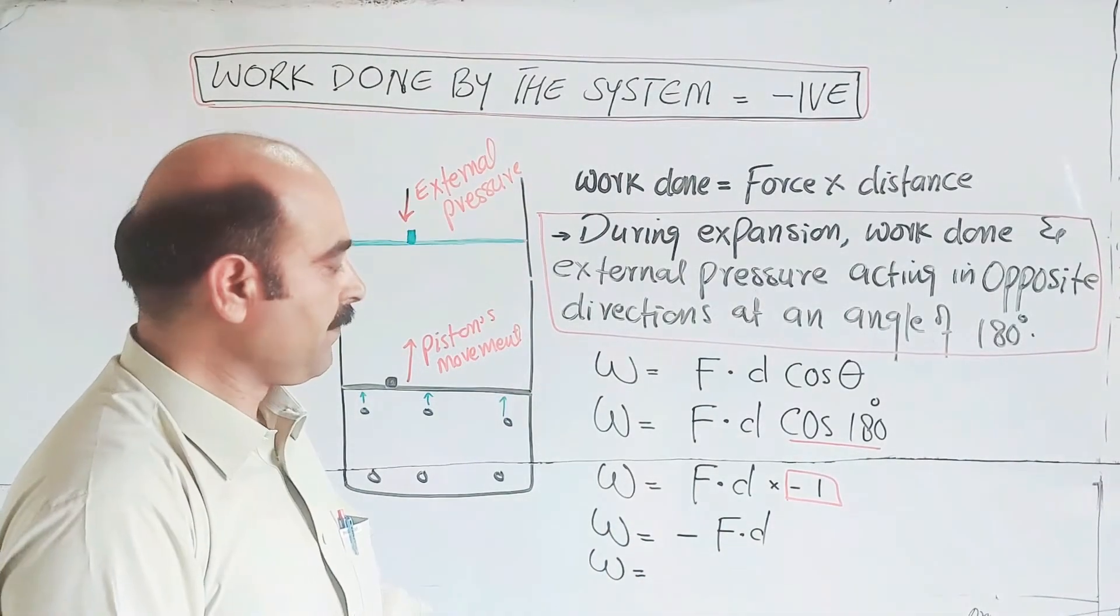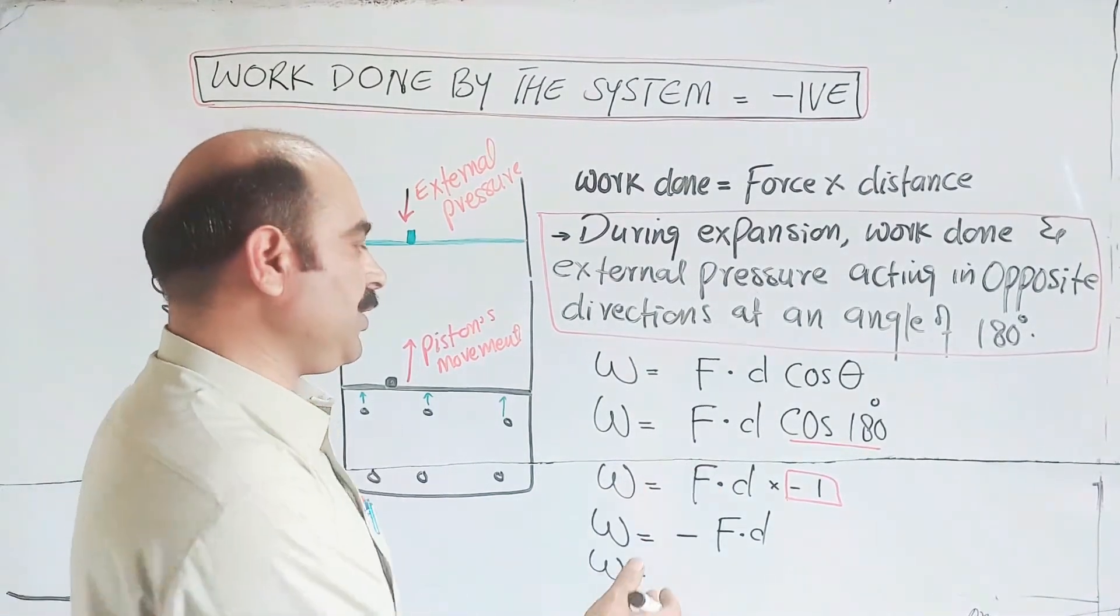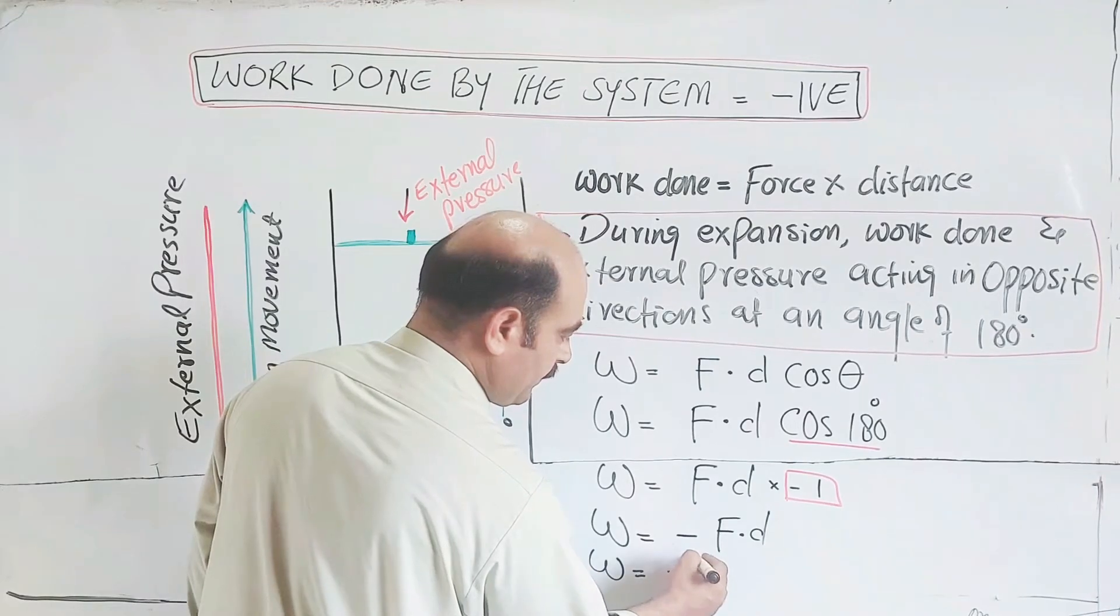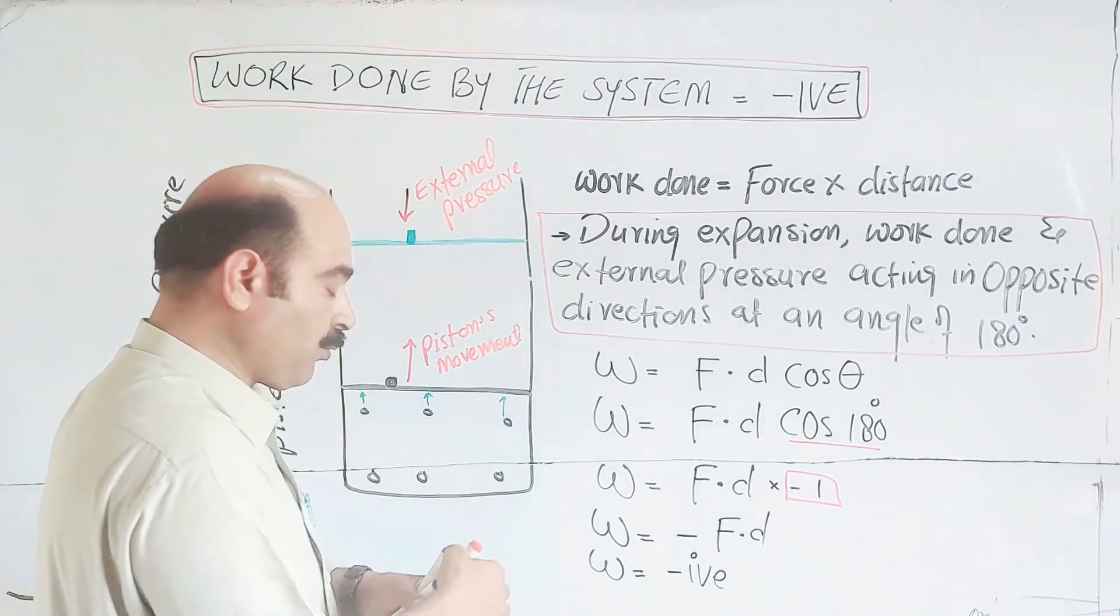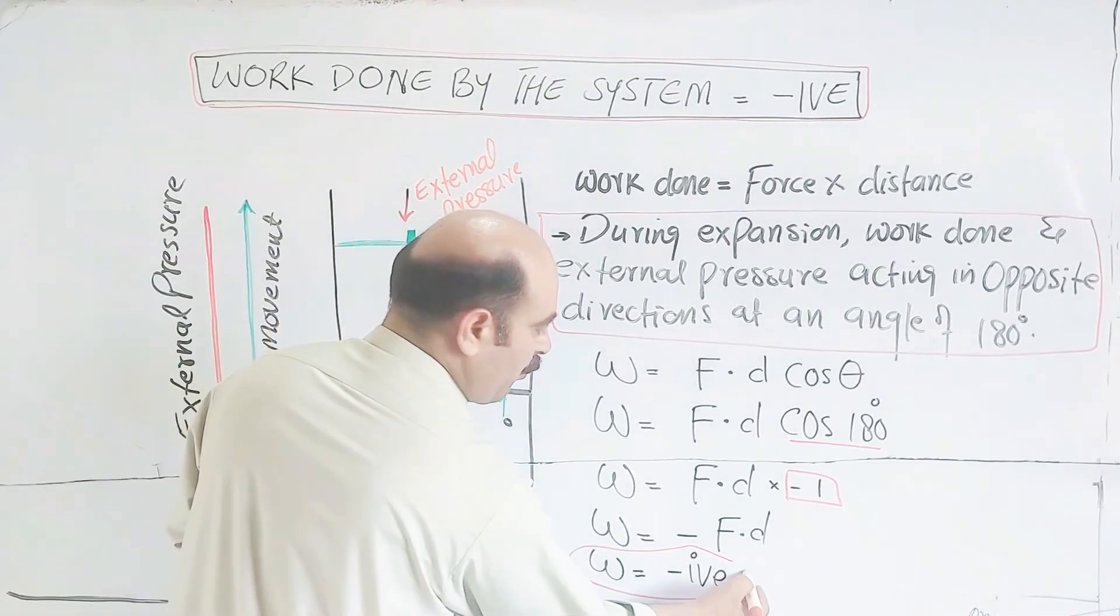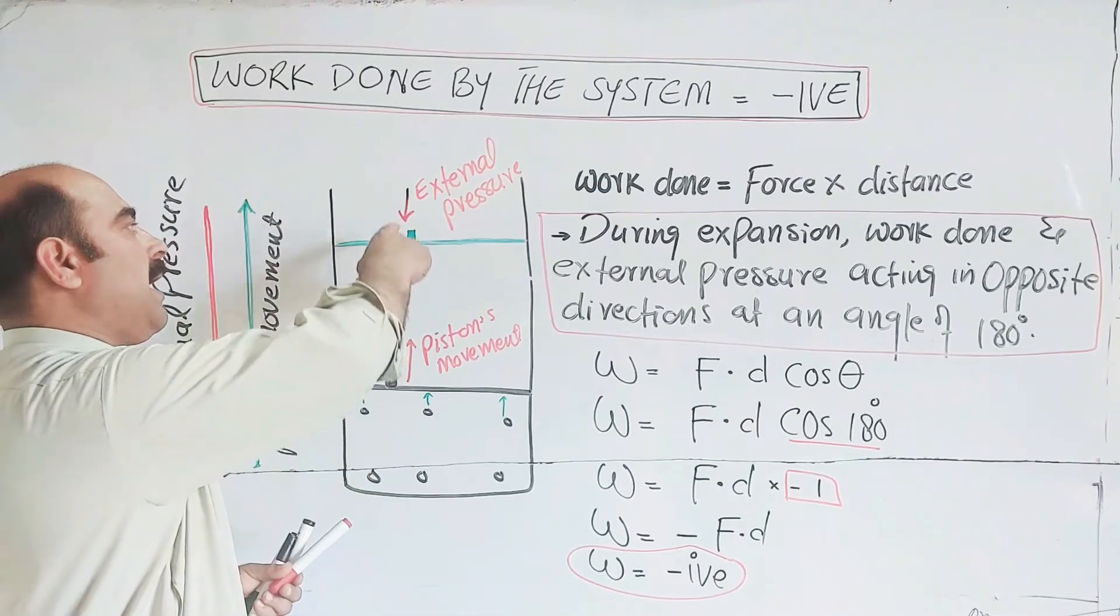Minus F times D. This shows that work done is negative because of the force. The force is in newtons, distance is in meters, centimeters, or millimeters. W is equal to minus F times D.